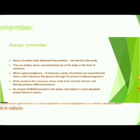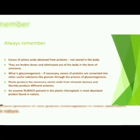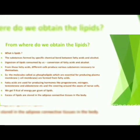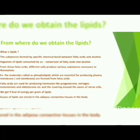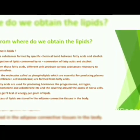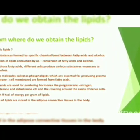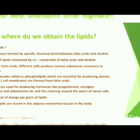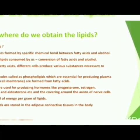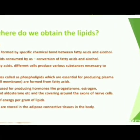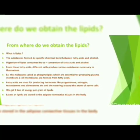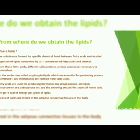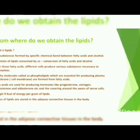Lipids are formed by specific chemical bonds between fatty acids and alcohol. After digestion, lipids are converted into fatty acids and alcohol. Fatty acids are used by cells to produce phospholipids for plasma membranes, hormones like progesterone, estrogen, testosterone, and aldosterone, and the covering around axons of nerve cells. We get 9 kcal per gram of lipids, and excess lipids are stored in adipose connective tissue.